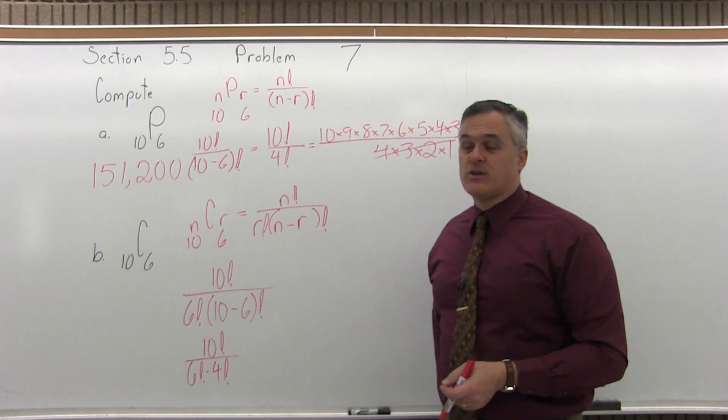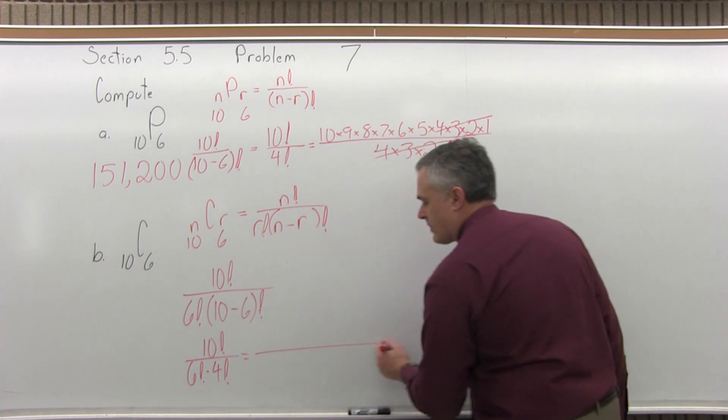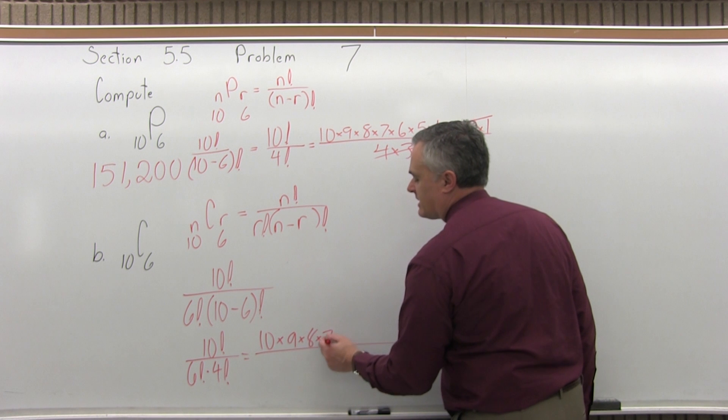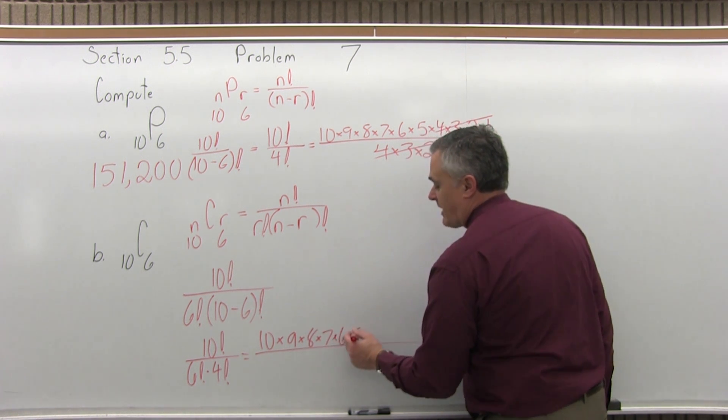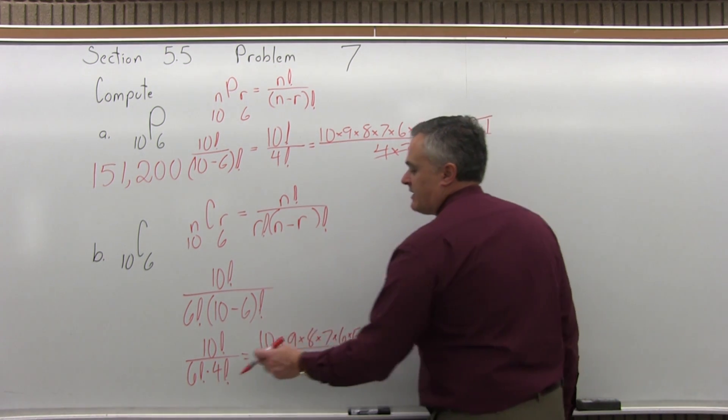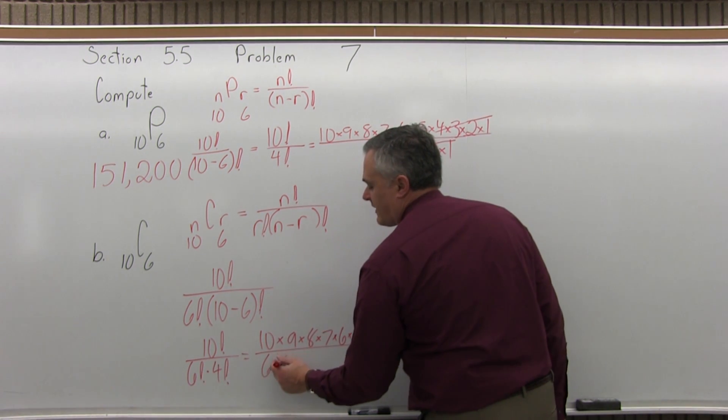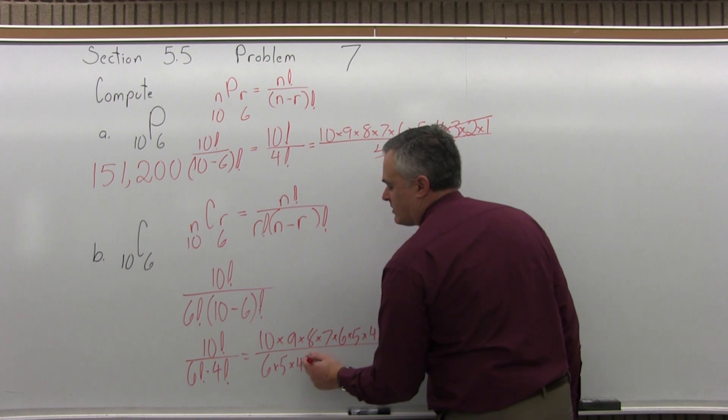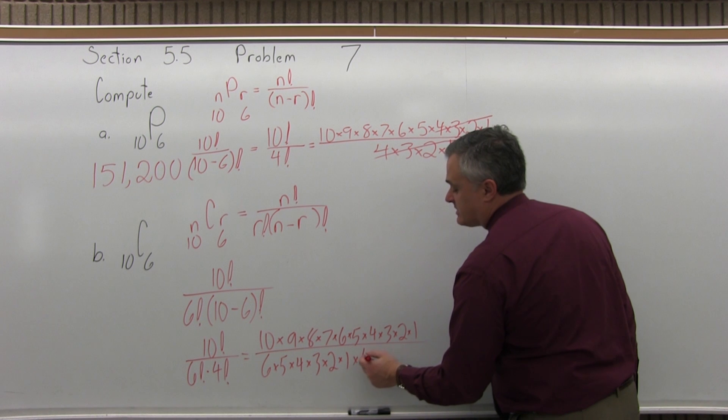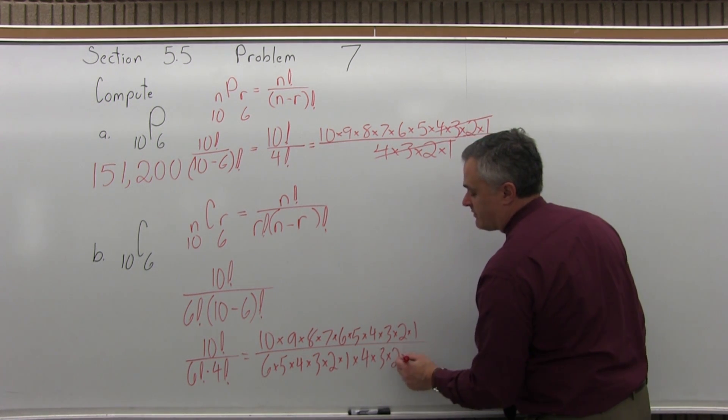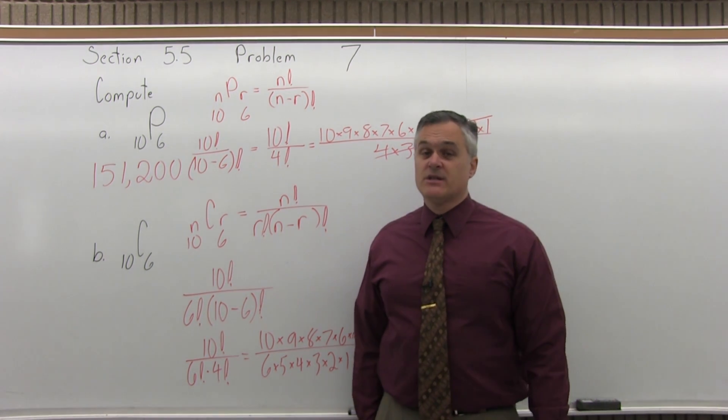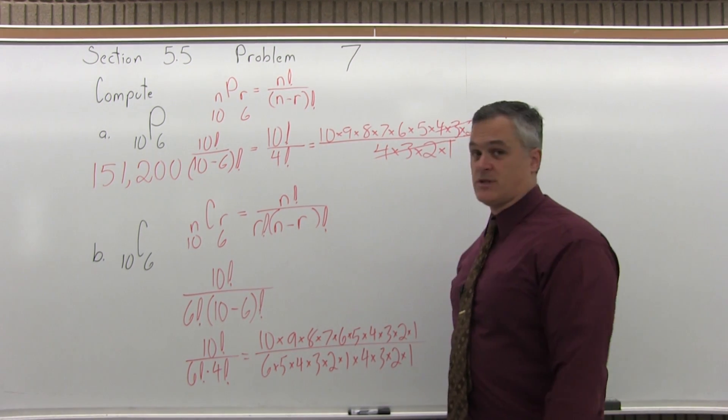Now you can do all the factorials. Numerator, 10 factorial is 10 times 9 times 8 times 7 times 6 times 5 times 4 times 3 times 2 times 1. Then in the denominator, 6 factorial is 6 times 5 times 4 times 3 times 2 times 1, and then times 4 factorial which is times 4 times 3 times 2 times 1. Now you can multiply all of that out and reduce it, and it will give you the right answer, but you're making yourself do a lot of extra work if you do that.